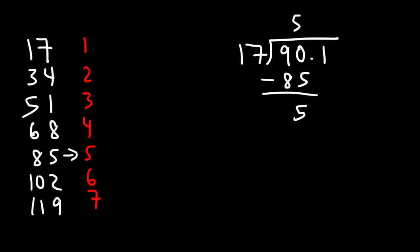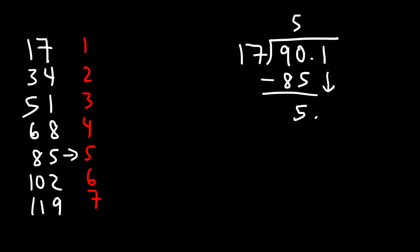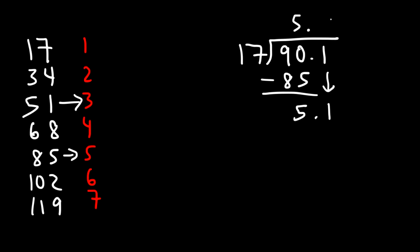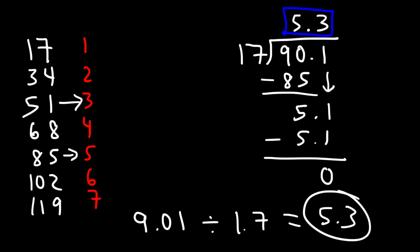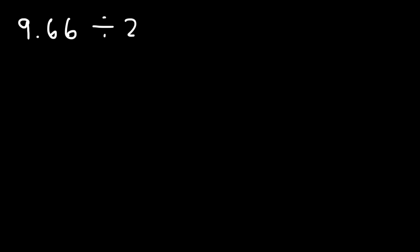Since 17 doesn't go into 5, we bring down the 1, making it 51. We need to add a decimal point here. How many times does 17 go into 51? Exactly three times. So 17 times 0.3 is 5.1, and our final answer is 5.3 — thus 9.01 divided by 1.7 is 5.3.